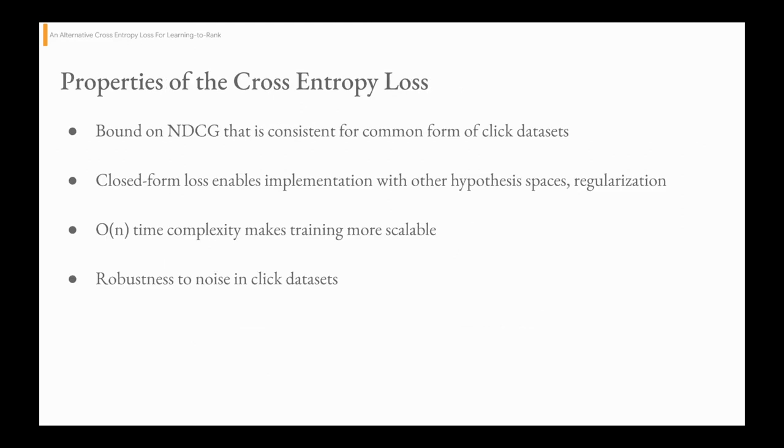So what we've shown today, and there's a lot more detail and discussion in the paper, is that we have a loss function that is a bound on NDCG, so it's theoretically sound. We have a closed-form loss here, which enables us to implement learning-to-rank algorithms with other hypothesis spaces, add regularization, and incorporate that into a multi-objective optimization setup. It is cheap to compute, and finally, and perhaps more interestingly, it is robust to noise in click datasets as well as in labels in general.